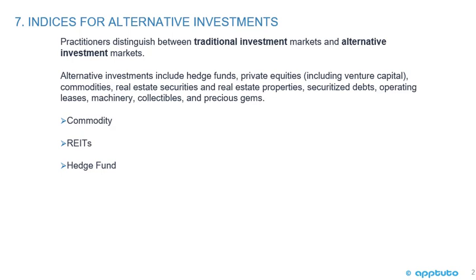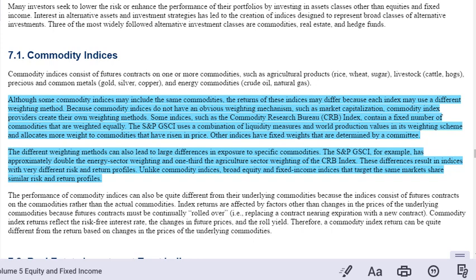With regards to the commodity indices, just a quick screenshot from the e-book: commodity indices consist of futures contracts on one or more commodities, such as agricultural products, livestock, precious and common metals, and energy commodities. It's important to note that although some commodity indices may include the same commodities, the returns on these indices may differ because each index may use a different weighting method. Because commodity indices do not have an obvious weighting mechanism such as market capitalization, commodity index providers create their own weighting methods.